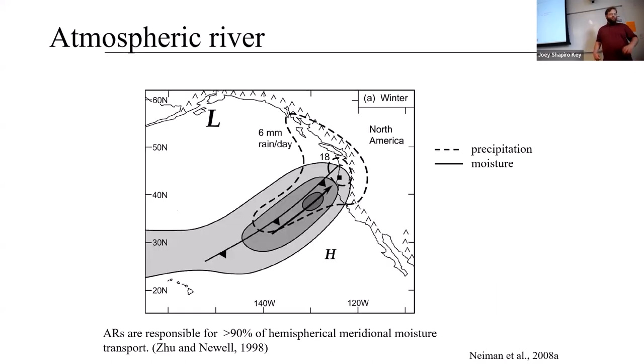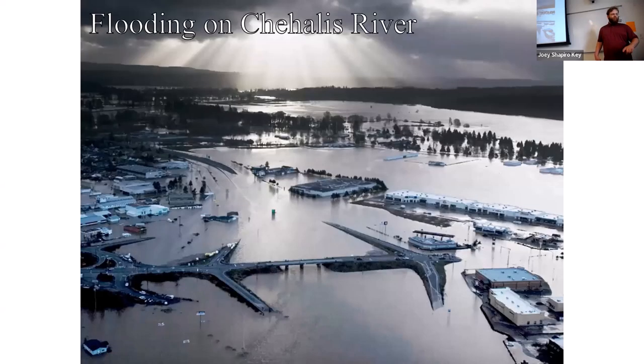This slide shows what an atmospheric river actually looks like. They bring moisture both across the ocean and from the tropics to the mid-latitudes. They can be responsible for up to 90% of hemispherical meridional moisture transport. The next slide shows what can happen when an atmospheric river hits. Large amounts of precipitation can be dumped in only a short period of time, resulting in intense river flooding.